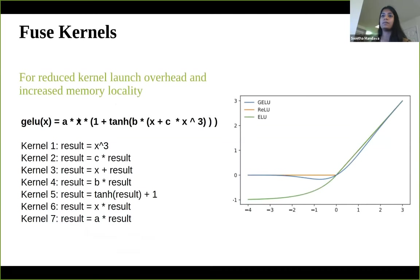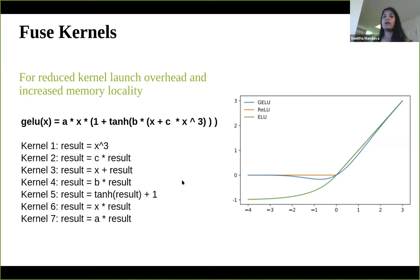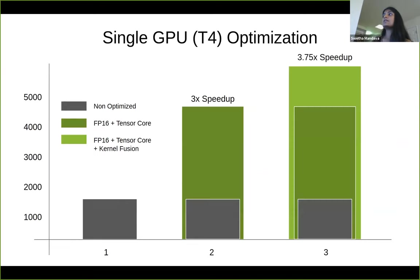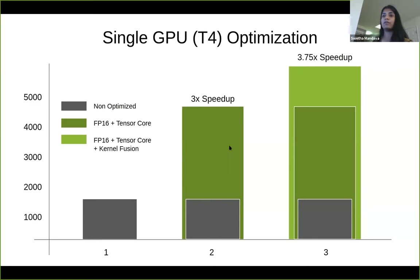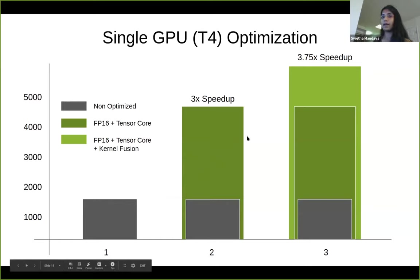The next thing that really helps with performance is fusing kernels. A lot of frameworks like PyTorch and TensorFlow use low-level operations. For example, the GELU activation results in seven kernel calls. If you can reduce all seven kernels into one kernel, it reduces the overhead of launching all those kernels and improves memory locality. Starting from the baseline model and applying FP16 gives about a 3x speedup for BERT. Adding kernel fusion for GELU increases the speedup to 3.75x.